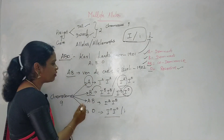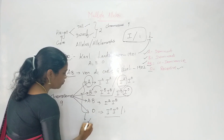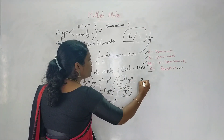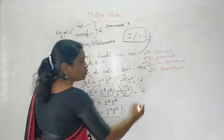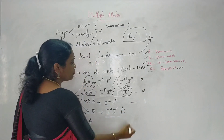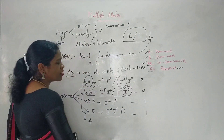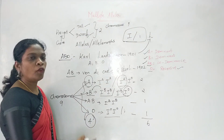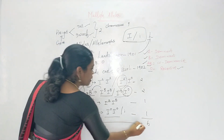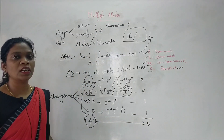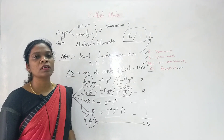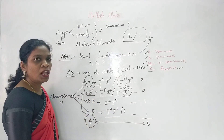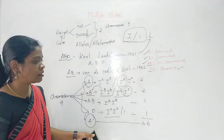There are four different types of blood groups. Blood group A has two genotypes, blood group B has two genotypes, blood group AB has one genotype, and blood group O has one genotype — totaling six alleles. To produce four different types of blood groups, there are six different forms of alleles present in the population. This mechanism is known as multiple allelism.